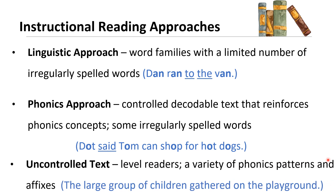And then you have uncontrolled text — your leveled readers. These have a variety of phonics patterns, prefixes, and suffixes, all different kinds of patterns. A sentence like 'A large group of children gathered on the playground' is an example of what you might see in an uncontrolled text.